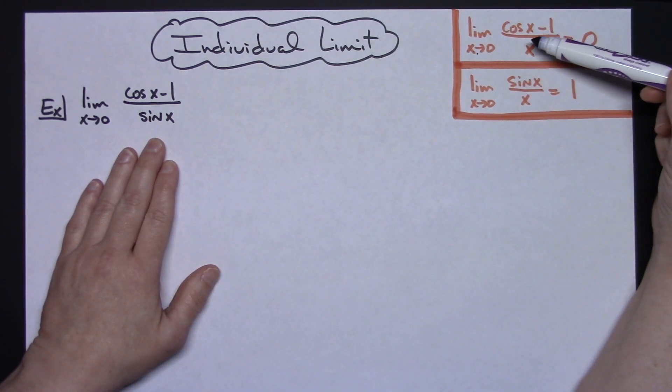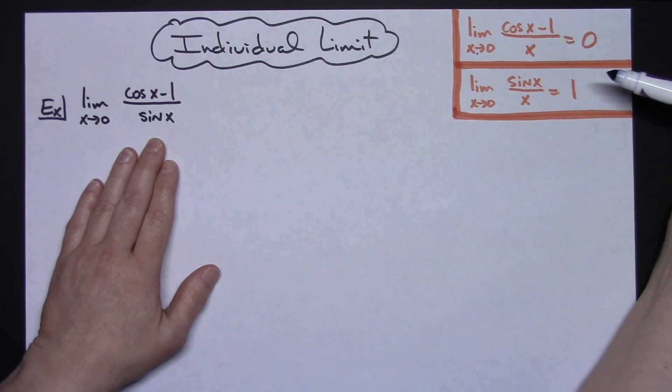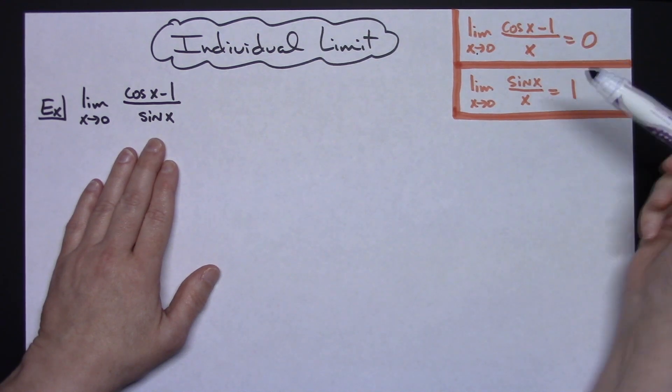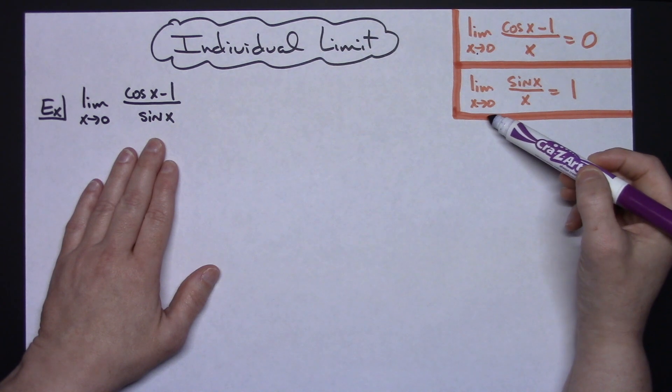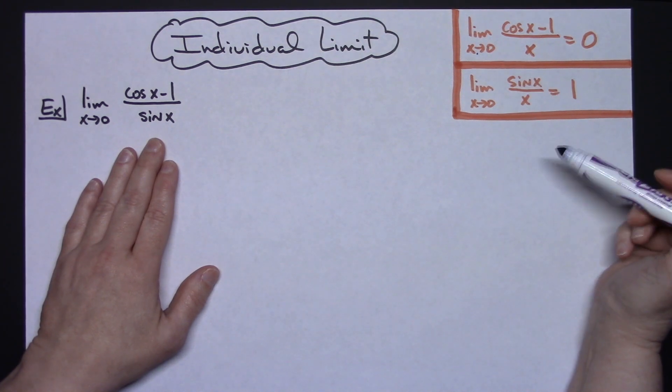We've got the limit as X approaches zero of cosine X minus 1 over X, and we should know that that is equal to zero. And the limit as X approaches zero of sine X over X is equal to 1.